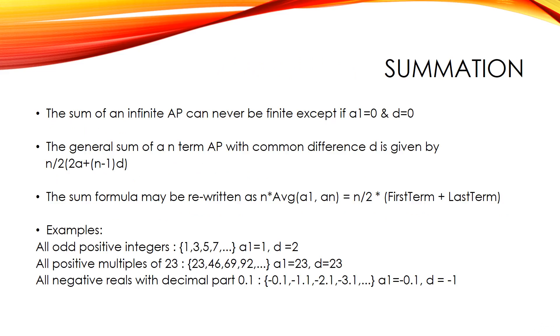Summation. The sum of an infinite AP can never be finite except if a1 equals 0 and d equals 0. The general sum of an n-th term AP with common difference d is given by n by 2 into 2a plus n-1 into d. The sum formula may be rewritten as n into average of a1 comma an equals n by 2 into first term plus last term.